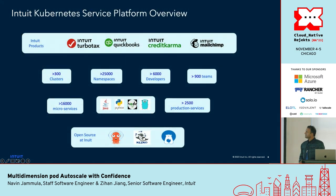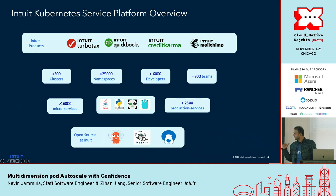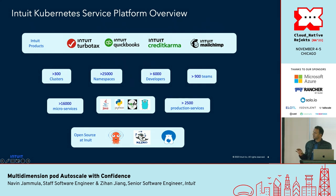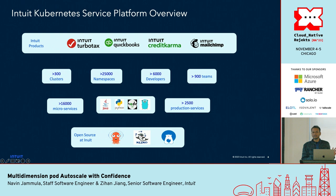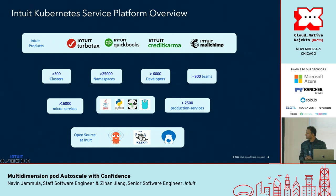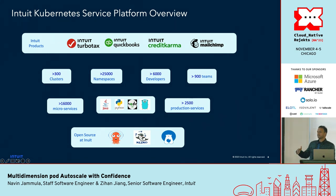Just a quick overview of the platform at Intuit: we have multiple products, clusters, namespaces, teams, and 6,000+ developers working on this platform. We have complete end-to-end automation where any team can onboard to a microservice with a click of a button — they get namespace setup, the service ready to use with a sample Hello World service. We have four technologies available as part of the onboarding, which we can correlate with how we are using autoscaling on top.